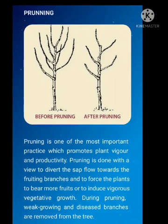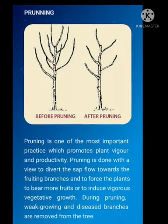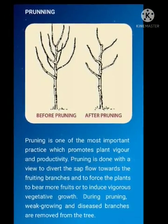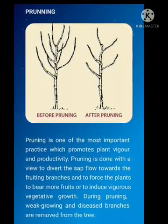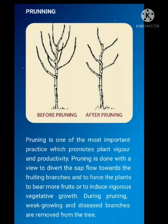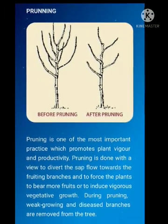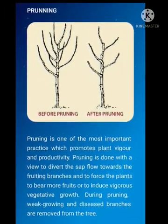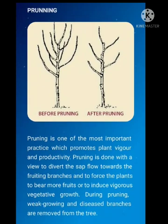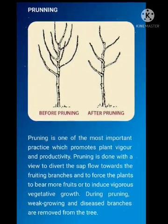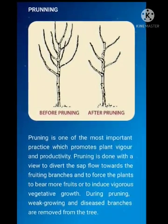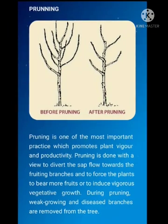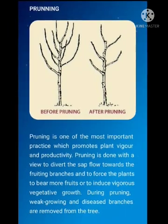Pruning is one of the most important practices which promotes plant vigor and productivity. Pruning is also done to divert the sap flow towards the fruiting branch and to force the plant to bear more fruits or to induce vigorous vegetative growth. During pruning, weak growing and diseased branches are removed from the tree.